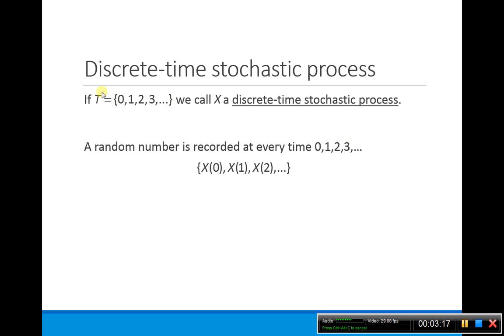Now if this set capital T is in the whole numbers 0, 1, 2, 3, then X is called a discrete time stochastic process. We're going to be talking about discrete time Markov chains.